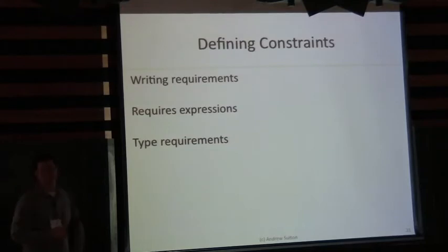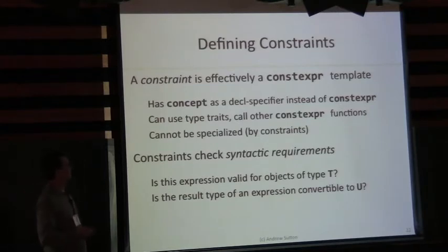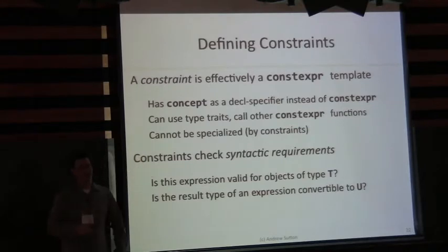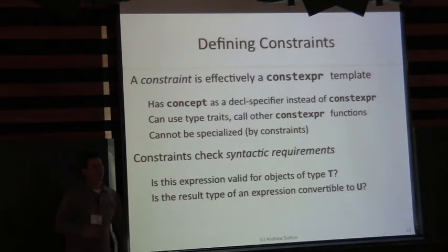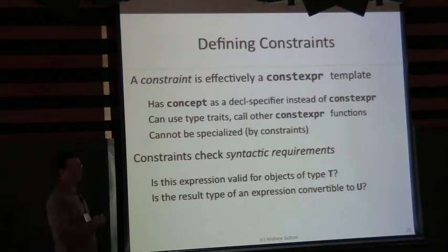How do you define constraints? A constraint is basically just a constexpr function. We use the concept specifier because we have some other expectations — constraints can't be specialized. This is one of the requirements of concepts: you can't have multiple definitions of a constraint for all types. Really what they're used to do is check syntactic requirements. The kinds of questions we're asking are: is this expression valid for some type T? Or is the result of this expression convertible to some type?